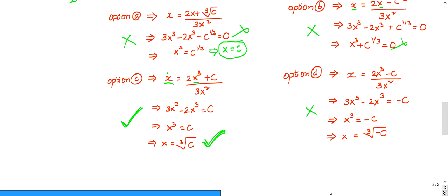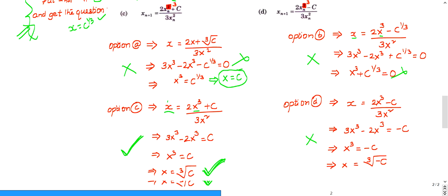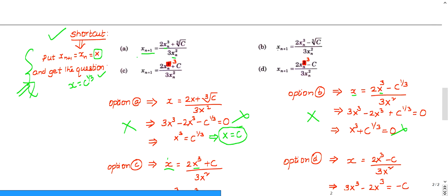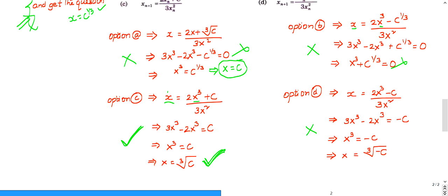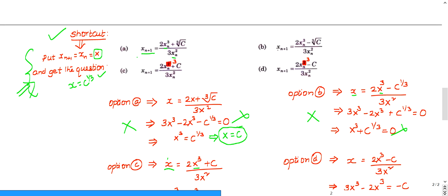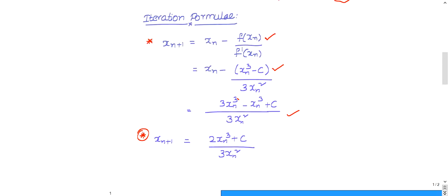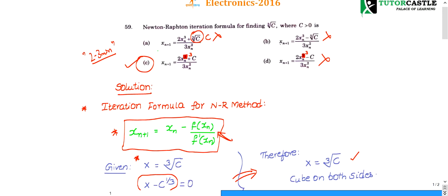In this way, you can check which option is correct by substituting x_{n+1} = x_n = x and verifying you get the original equation back. This is a very easy shortcut method for NR method iteration formula questions, taking hardly 30 seconds to solve. This is the end of the question — post any doubts in the comment box and subscribe for more updates.